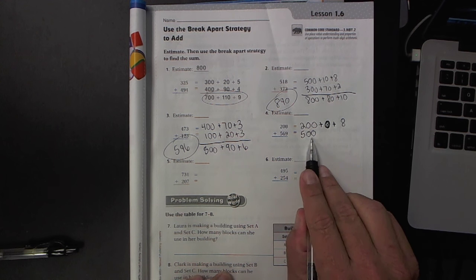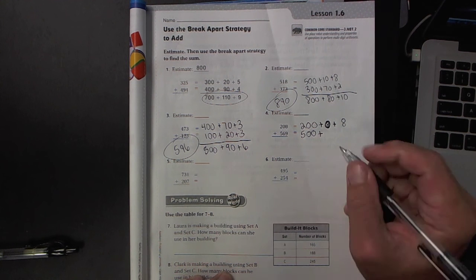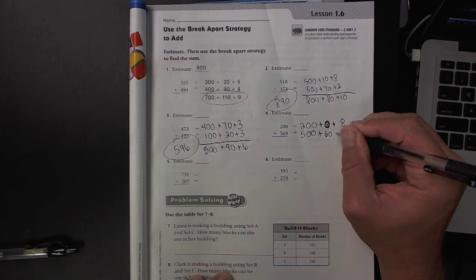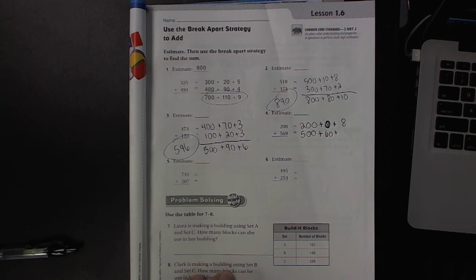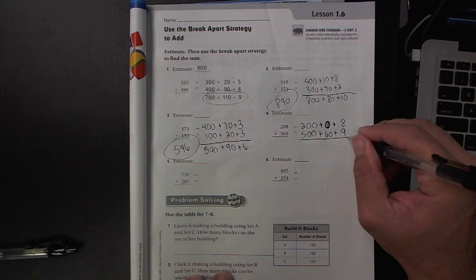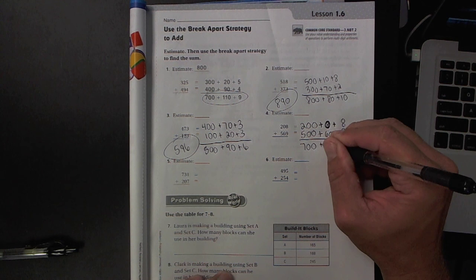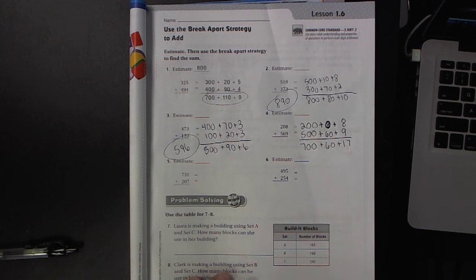The 5 is in the hundreds place, so 500 plus 6 is in the tens, so maybe that does make it a little bit easier because now you can, at least everything is lined up now. And then 9 is in the ones place, 700, 60, and 17.